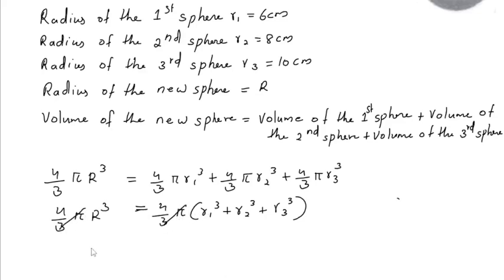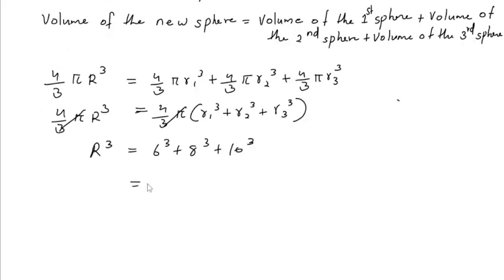Now R cube is equal to r1 cube is 6 cube plus r2 cube is 8 cube plus r3 cube is 10 cube. Cube of 6 is 216 and 8 cube is 512. 10 cube is 1000.